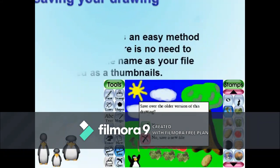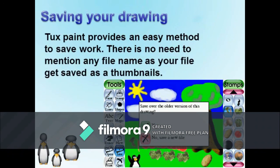Saving a File: Tux Paint provides an easy method to save your work. Click on the save tool. There is no need to mention the file name. Tux Paint saves your file as a thumbnail rather than giving it a file name, and the Tux penguin mascot confirms that your file has been saved.